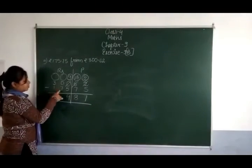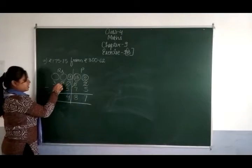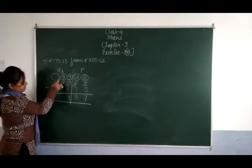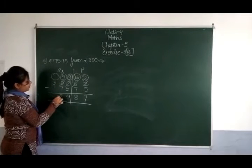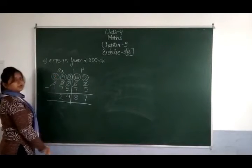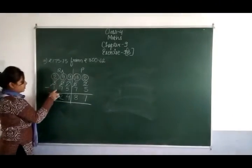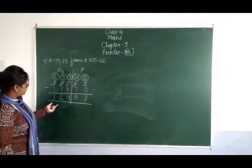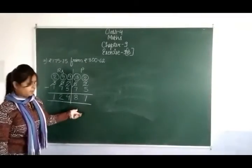0 में से 7 नहीं जाएंगे, तो 1 borrow कर लेंगे — यहाँ 9 हो जाएगा। 9 में से 7 गए तो 2 बचेगा। इसने अपना 1 इसको दिया, यहाँ 2 हुआ। 2 में से 1 गए तो 1 remaining बचेगा। That is 124 rupees and 87 paise.